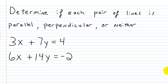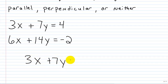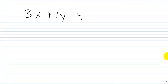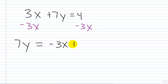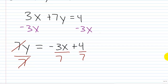Let's look at a practice exercise — I want to determine if each pair of lines is parallel, perpendicular, or neither. Our first equation is 3x plus 7y equals 4, and our second equation is 6x plus 14y equals negative 2. All we're going to do is solve each for y and see what the slope is. Starting with 3x plus 7y equals 4: subtract 3x from both sides, giving 7y equals negative 3x plus 4, then divide both sides by 7. We end up with y equals negative 3/7 x plus 4/7.